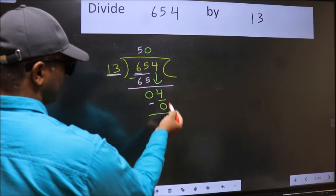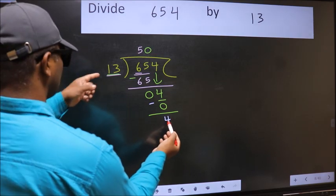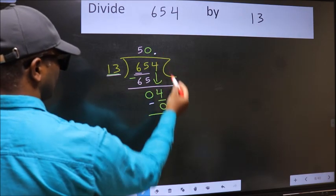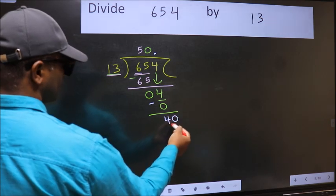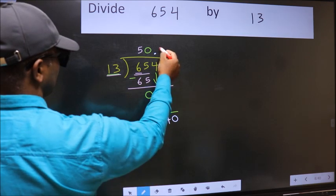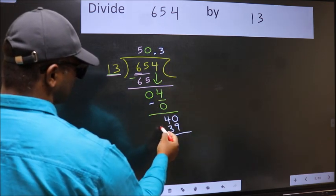Over here we did not bring any number down, and 4 is smaller than 13, so now you can put dot and take 0. So 40—a number close to 40 in 13 table is 13 threes are 39. Now we should subtract.